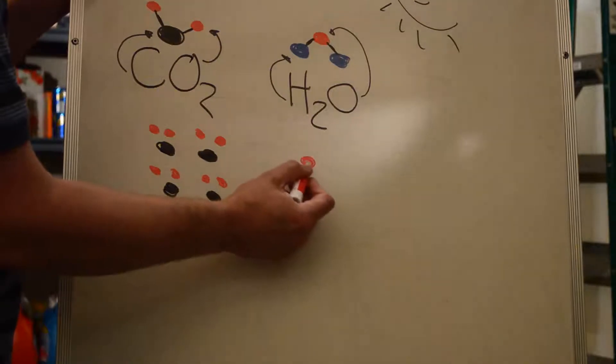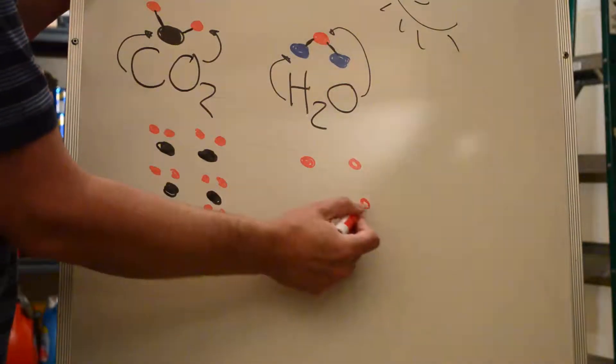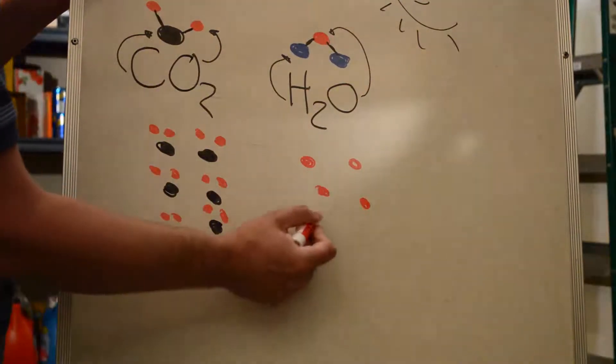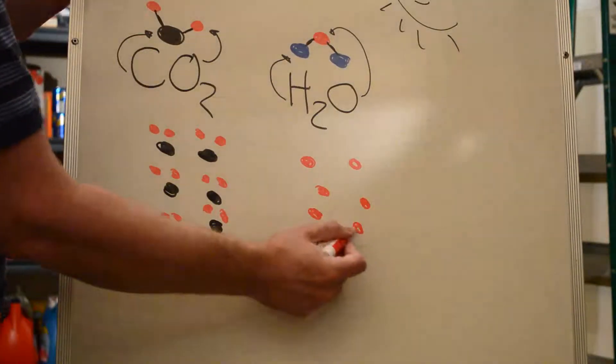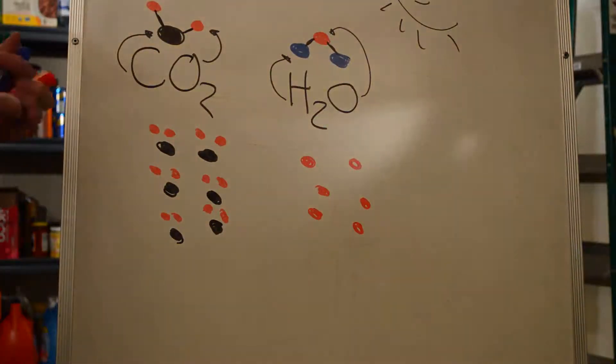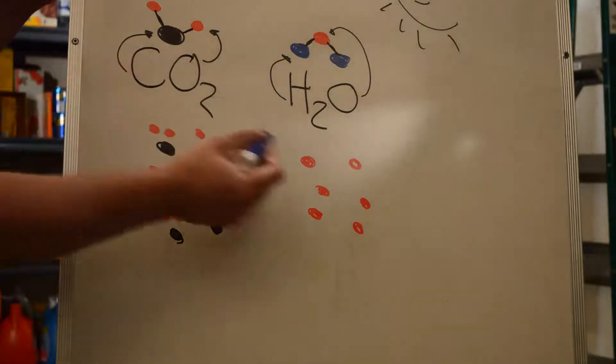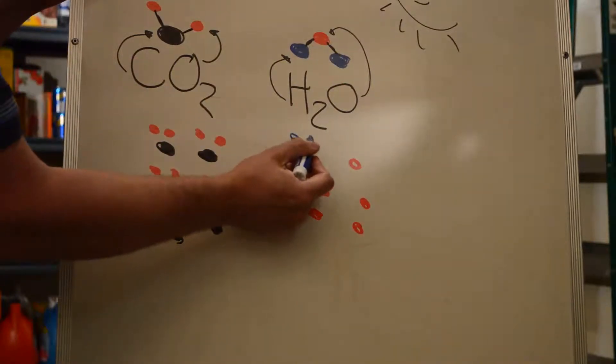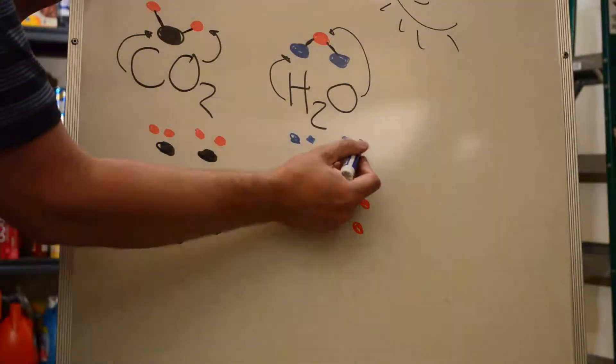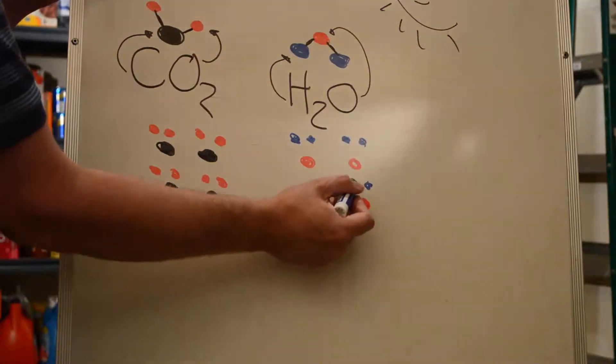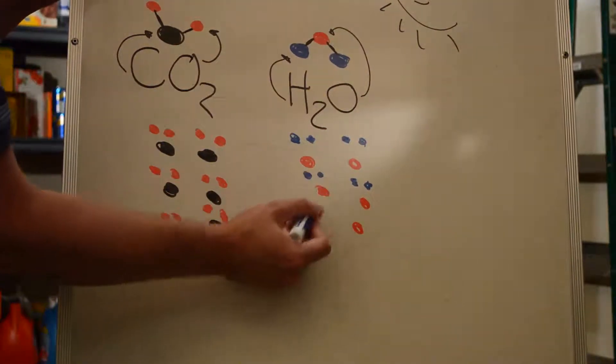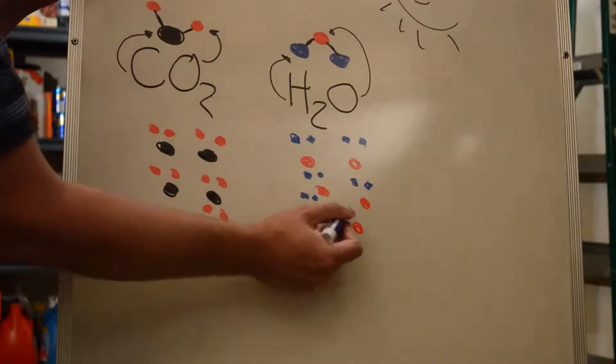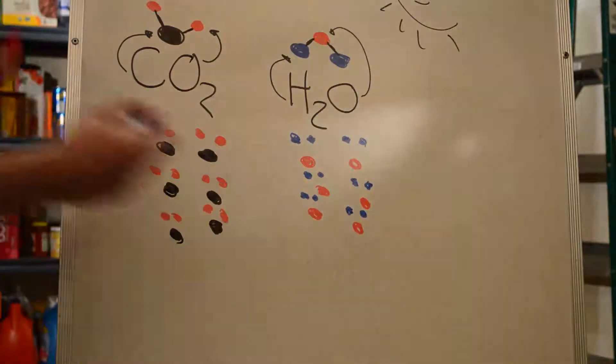And then I'll hook these in again in a second. And then it needs six of those as well to make some glucose. And so we have six of the oxygens. And then some hydrogens. One, two, three, four, five, six, seven, eight, nine, 10, 11, 12.